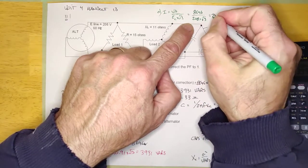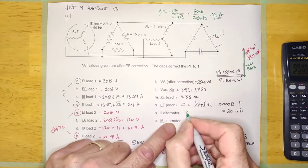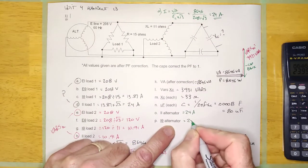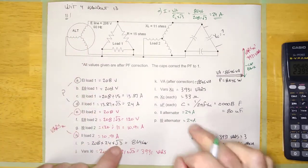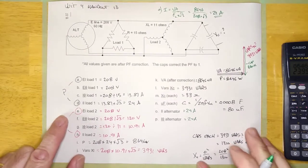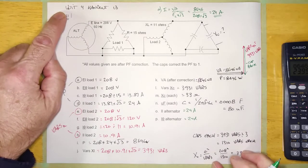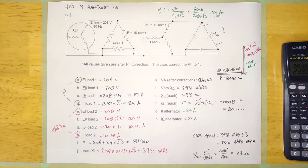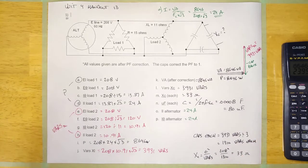208 times root 3, then 8,646 divided by that answer, gives 24 amps. That's the I line for the alternator. Try your homework — it's the rest of unit 4 handout 13, questions 2, 3, and 4. I might take up number 3 in the next video, so come back for that.